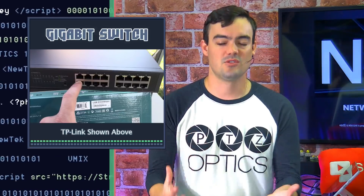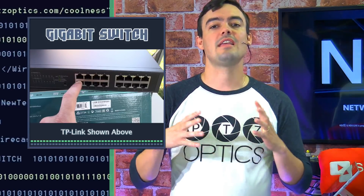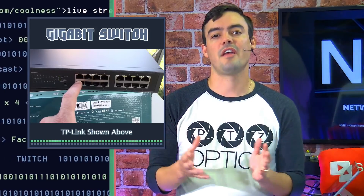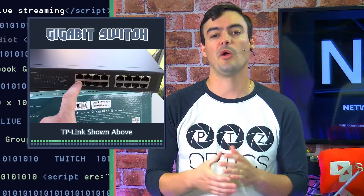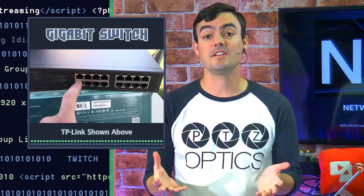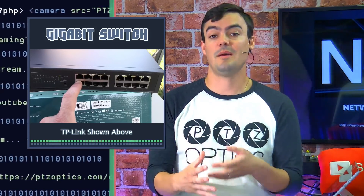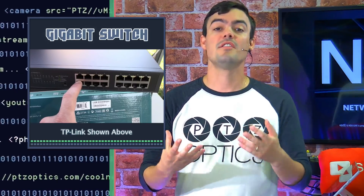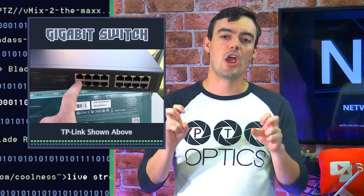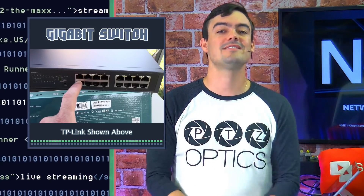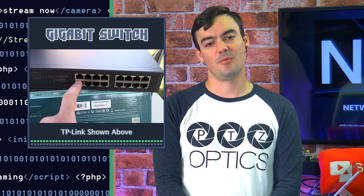A gigabit switch — the TP-Link shown above — is a gigabit of data available on all the different ports on your network switch, meaning you could have 16, 32, sometimes even more devices all connected on what's called a local area network. We're going to give you guidelines on how to choose the right switch for IP-based video production.